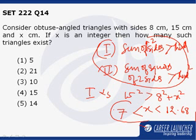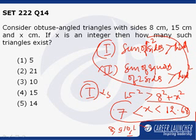So in this particular case, case number 1, the possible values x can take are 8, 9, 10, 11, and 12 - five possible values.